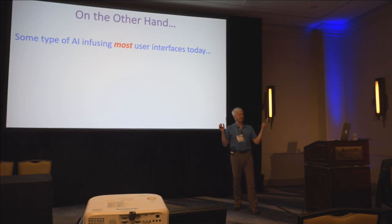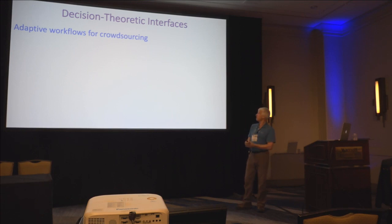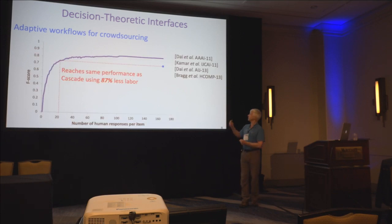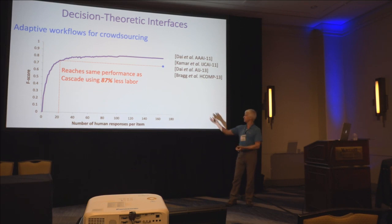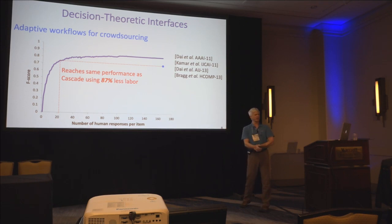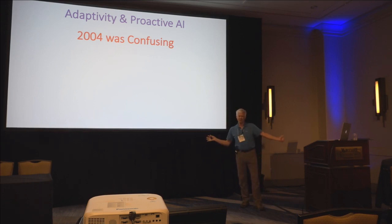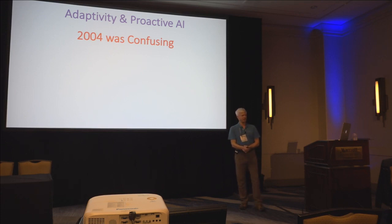AI and some of the techniques SUPPLE put forward are having a lot of impact — AI is getting into software in one shape or another. The idea of decision-theoretic optimization is getting play in crowdsourcing: optimizing crowdsource workflows can get higher-quality results with much less labor. One system by Jonathan Bragg used 87% less labor than a system we had designed ourselves the year before. There was also a context of confusion about adaptivity in interfaces back in 2004.